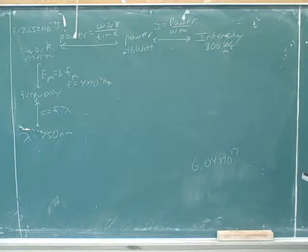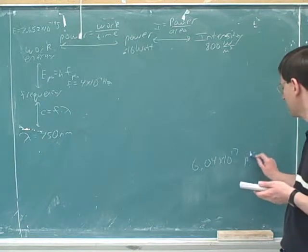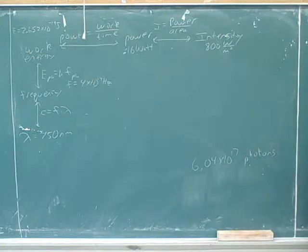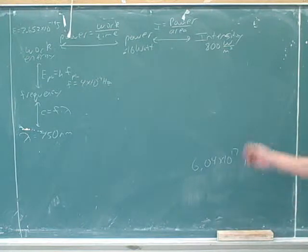So what's your answer? 6.04 times 10 to the 17th. What? Does it seem reasonable? Yeah, it should be a lot. It should be a lot because photons are tiny particles. There's tons of those. Okay, well you worked that out. You had some trouble with the units, but other than that, you worked everything out. That's good.